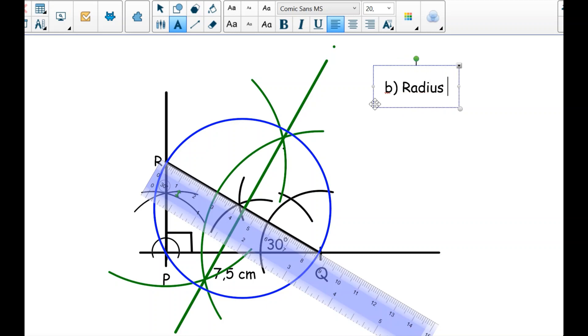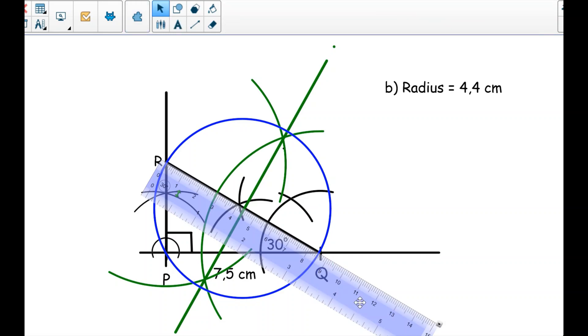Here my measurement according to my ruler is 4.4 cm. I'll write, this was part B, radius is 4.4 cm.